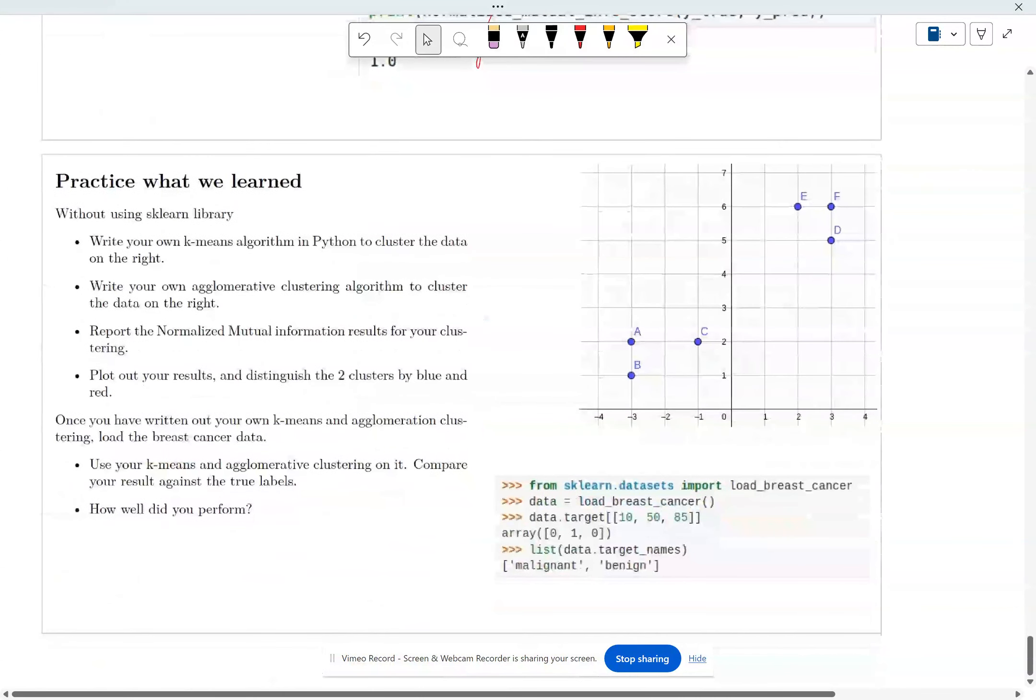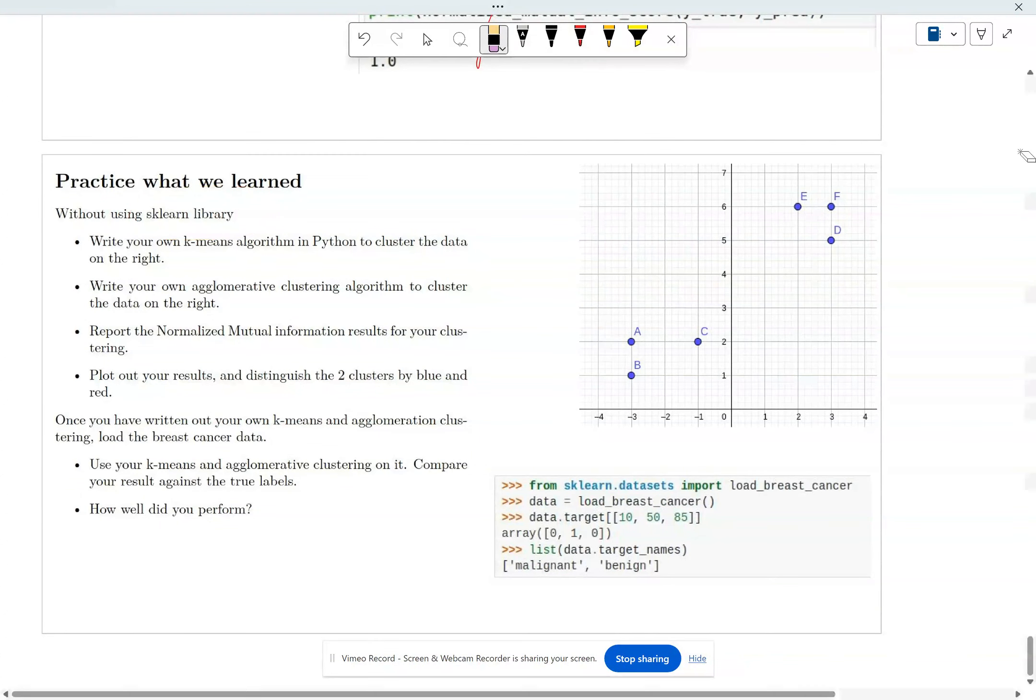So at this point, I want you to practice writing your own code for k-means algorithm to essentially cluster the data on the right. So this is what you want to do. And you want to write k-means as well as the agglomerative clustering. See if you can do this.